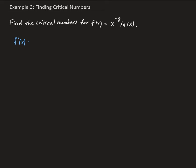So we're going to have f prime of x equals — we're going to apply the product rule here. So we're going to have x to the minus eight times the derivative with respect to x of natural log of x, plus natural log of x times the derivative of x to the negative eight.